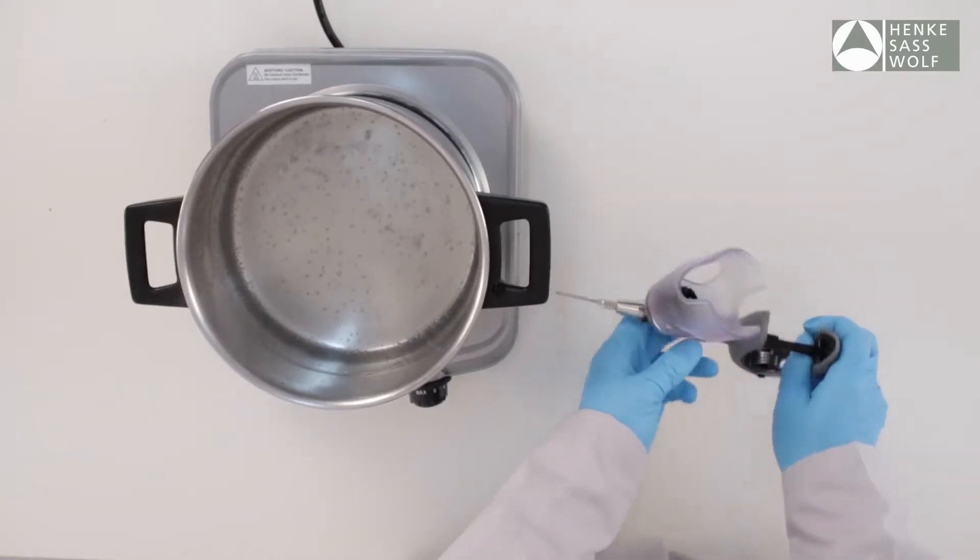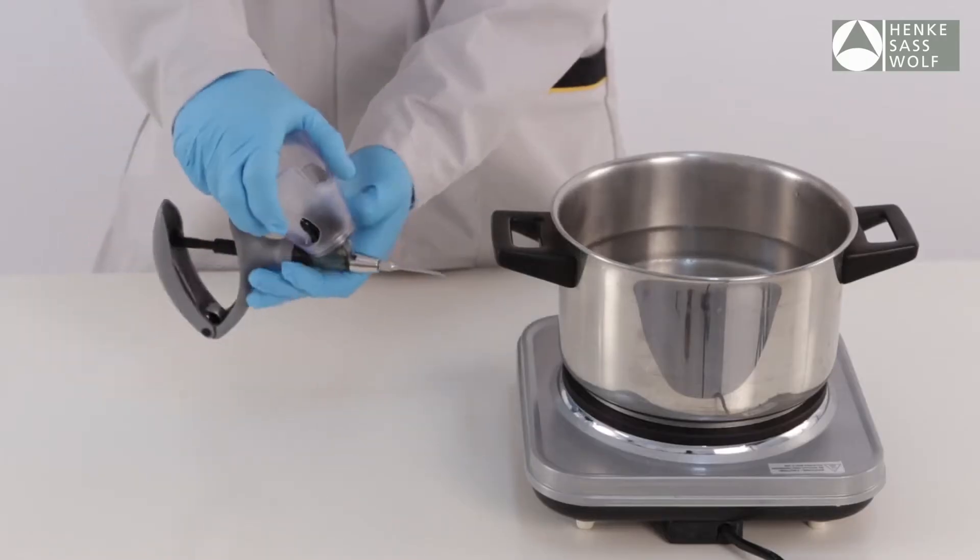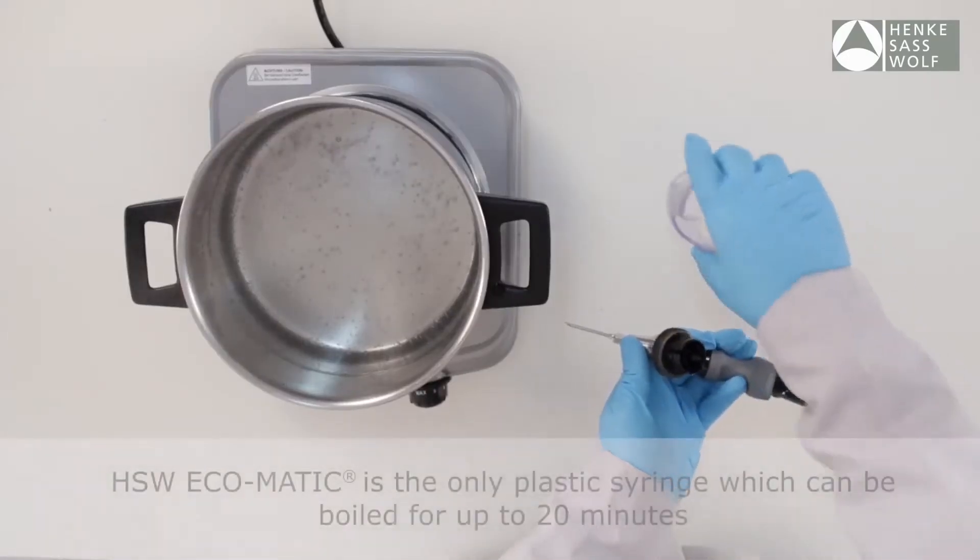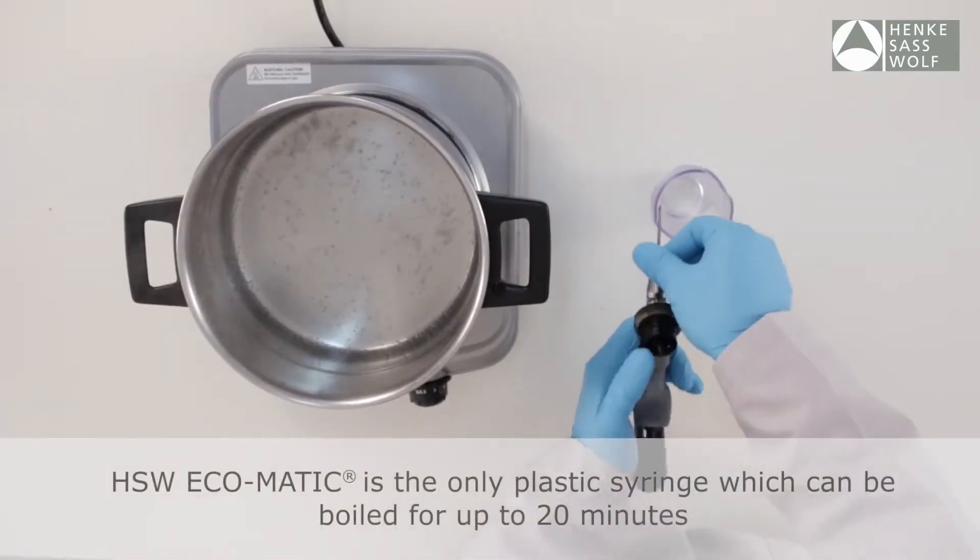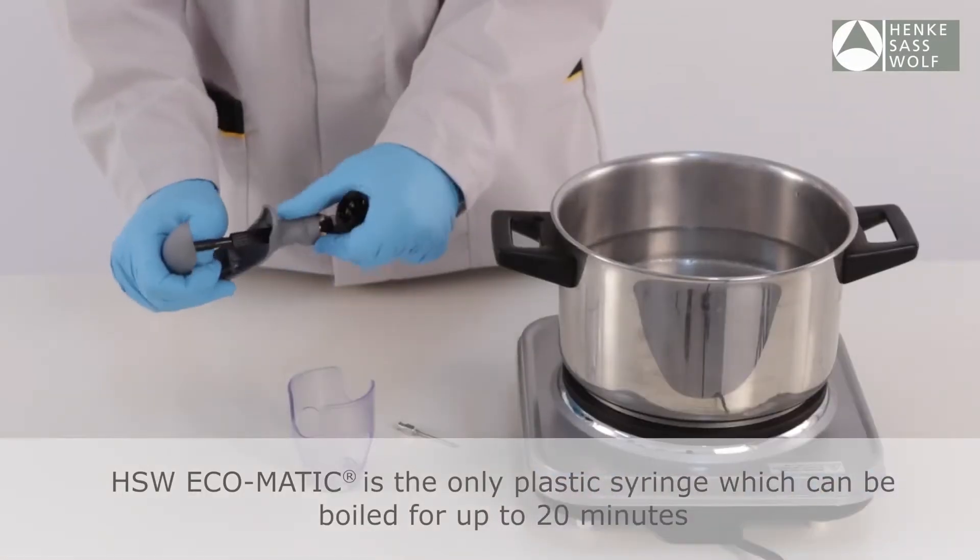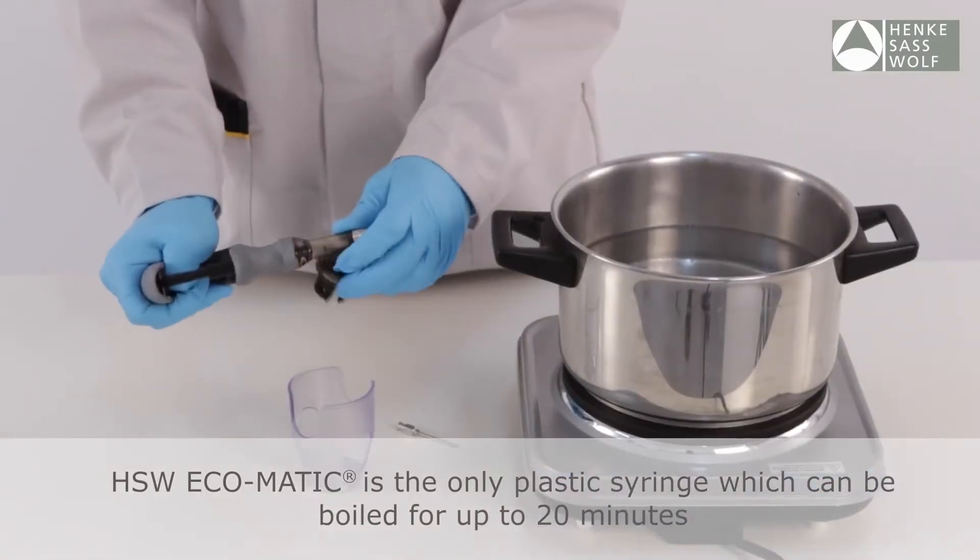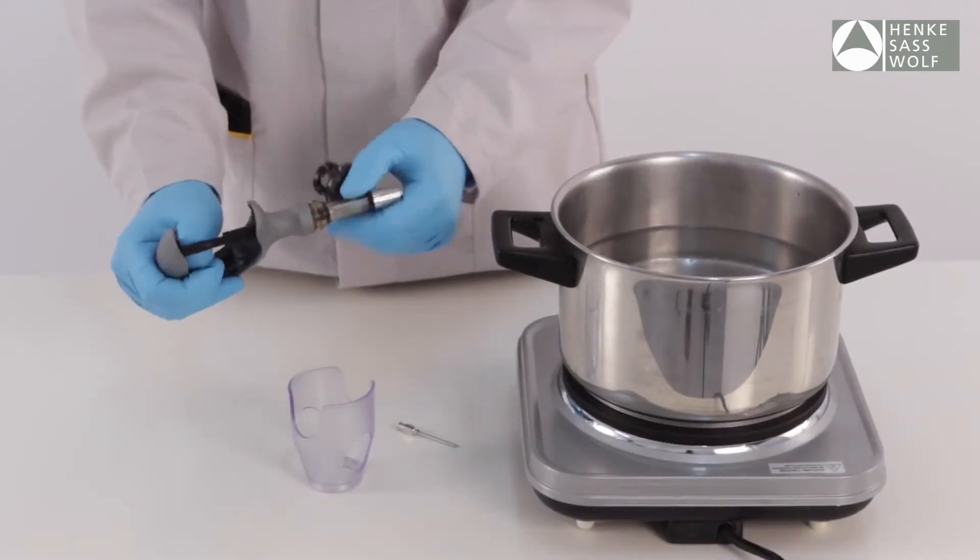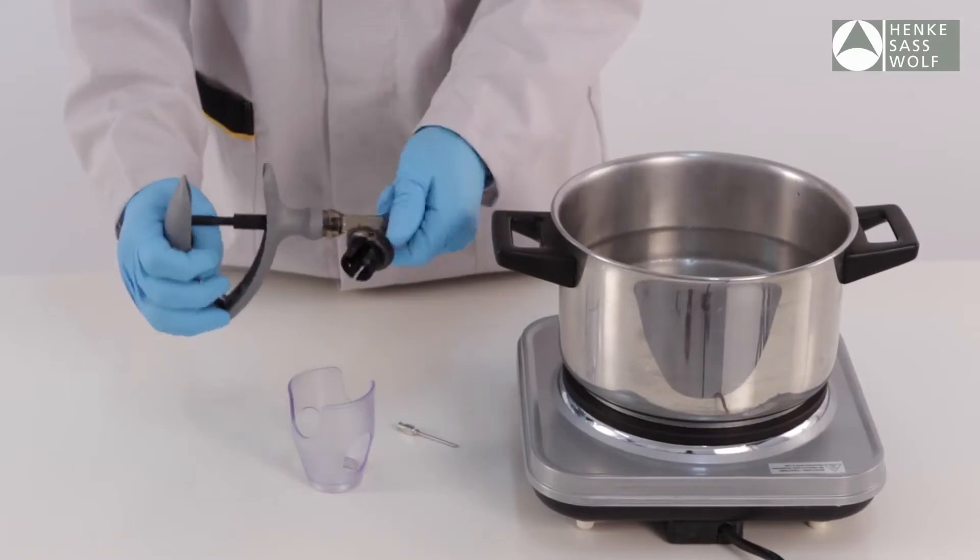It is recommended that the Ecomatic and a supply of needles or nozzles be disinfected before and after each use. Suspend the complete Ecomatic, including needles or nozzles, in a container of water and boil for up to 20 minutes. Ideally, disassemble the cylinder from the handle and boil the syringe in this disassembled condition.